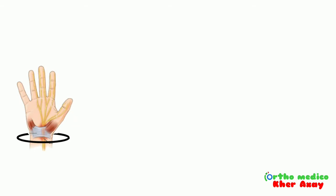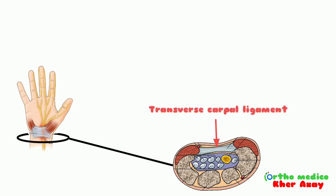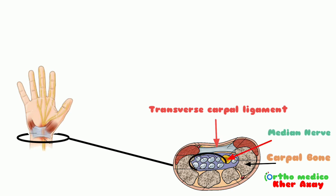Looking at a cross section of the wrist, we can see what passes through the carpal tunnel. Anteriorly by the transverse carpal ligament, posteriorly by the carpal bones. Through it, the median nerve passes along with nine tendons.